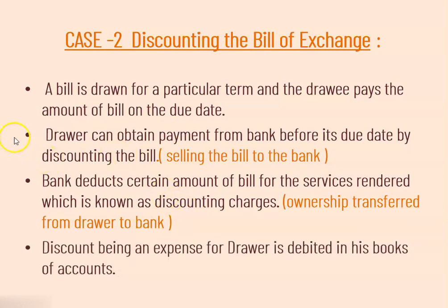Discounting charges, being an expense for the drawee, is debited in his book of accounts. The bank deducts a certain amount as discounting charges, and this is an expense from the drawee's point of view. In short, case number 2 — discounting the bill of exchange — means the ownership transfers from drawee to the bank, and the bank makes the payment to the drawee before the due date.